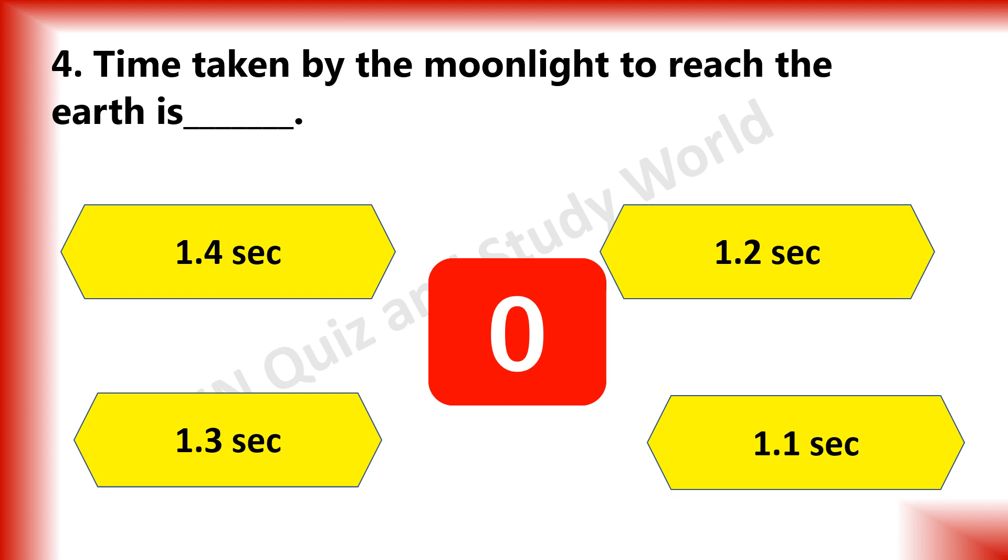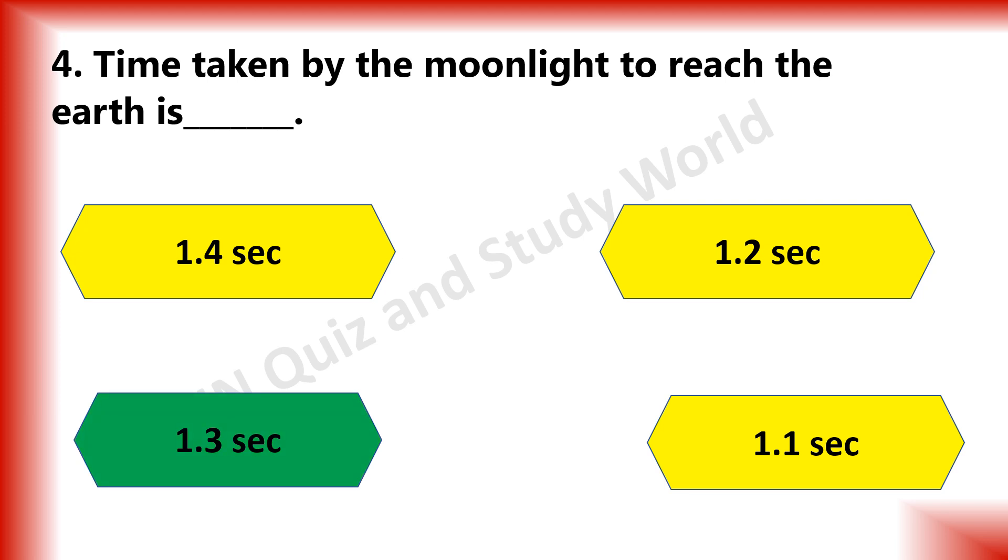What is the time taken by the moonlight to reach the Earth? Is it 1.4 seconds, 1.2 seconds, 1.3 seconds or 1.1 seconds? The answer is 1.3 seconds.